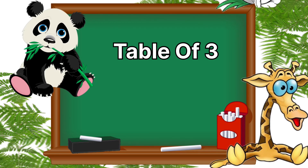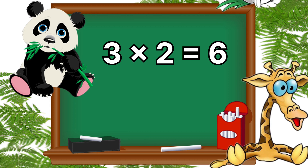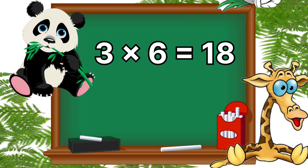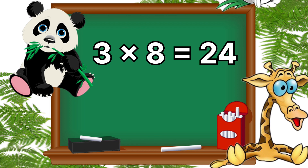Hello, how are you today? We learned table of three. Three ones are three, three twos are six, three threes are nine, three fours are twelve, three fives are fifteen, three sixes are eighteen, three sevens are twenty-one, three eights are twenty-four.